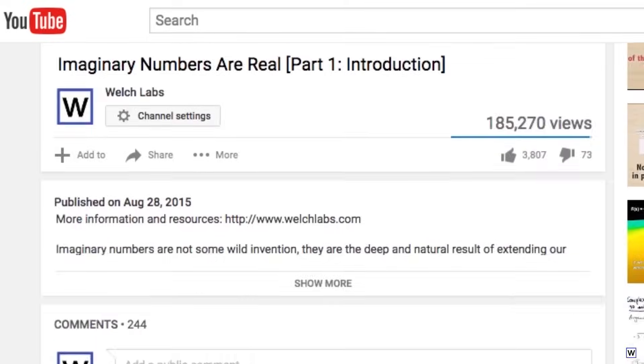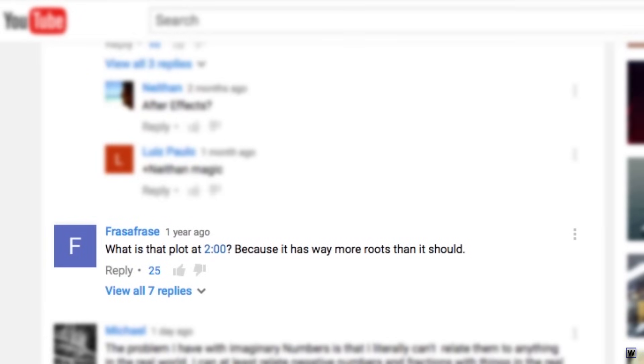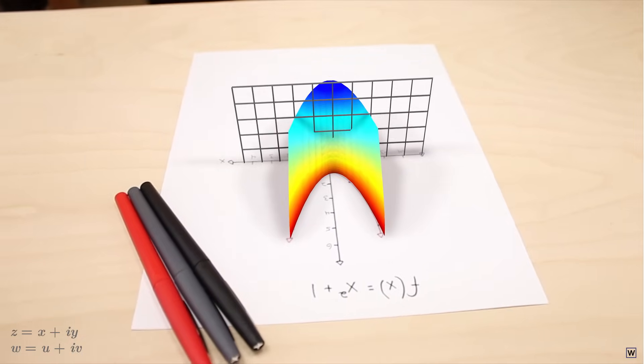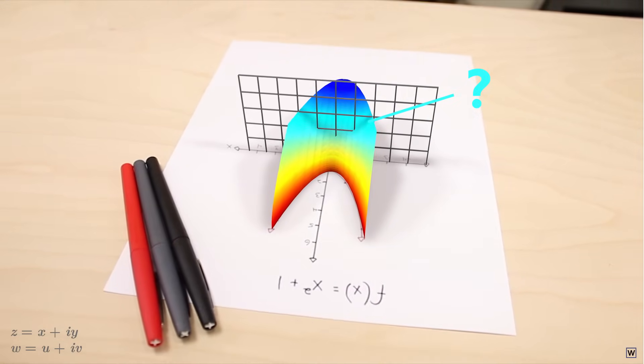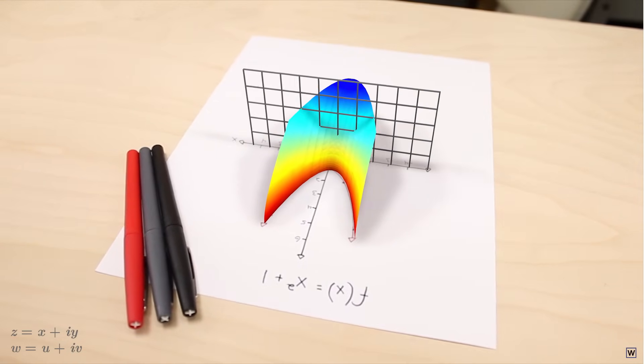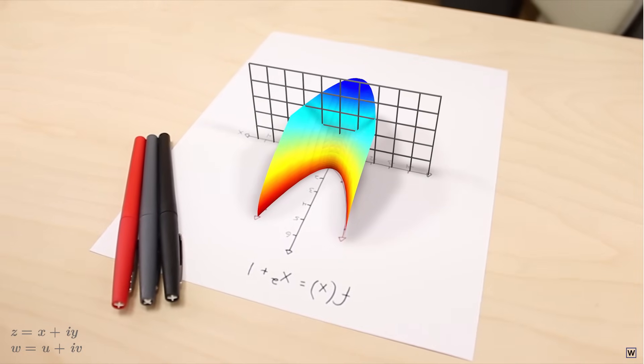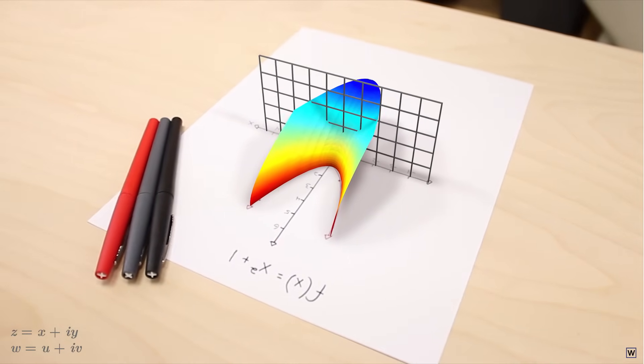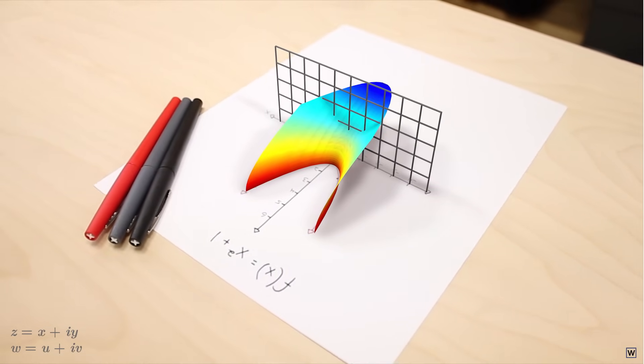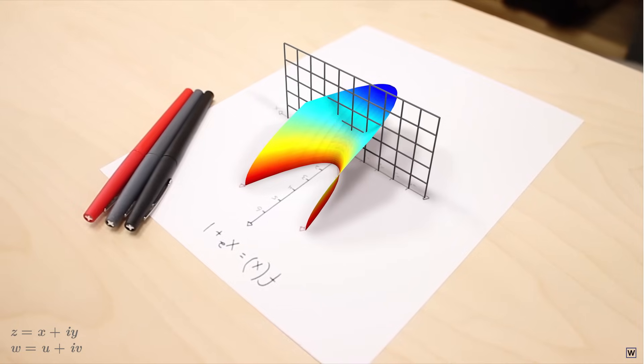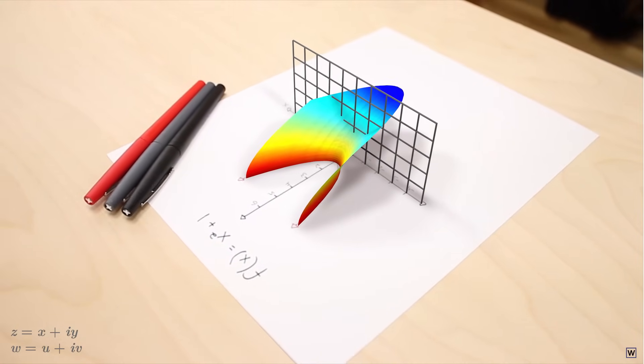When we first saw this surface in part one, many of you asked a very good question. If, according to the fundamental theorem of algebra, our function is supposed to have exactly two roots, why does our surface appear to equal zero at way more than two locations? This apparent contradiction has everything to do with the shortcomings of living in three dimensional space that we've been discussing. When we visualize four dimensional functions in three dimensional space, we must remember that what we're really seeing is a projection, a shadow of the function's full four dimensional form.